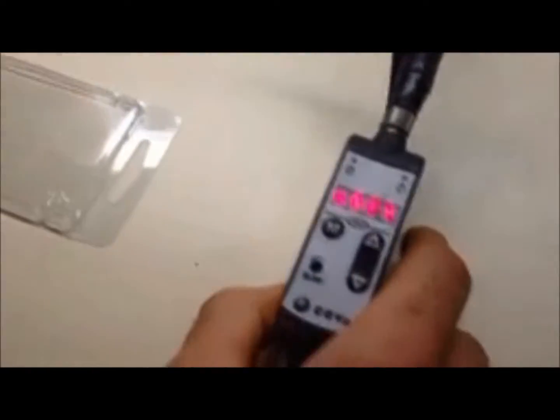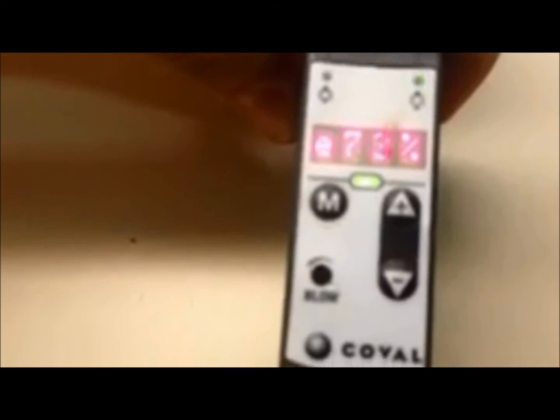All right, so what that's going to do is I'm going to allow a little bit of leakage. And you'll see that the unit cycles as it goes between 65 and 75 percent.